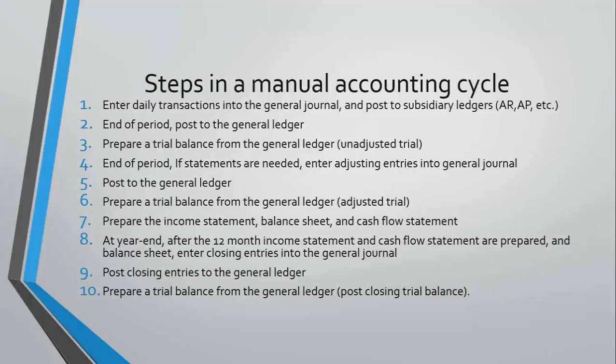Once we've done the closing entries in the same general journal, we post to the same general ledger to get balances. Then we do number 10, the final trial balance, which we call the post-closing trial balance. It is very short because it only has the permanent accounts: assets, liabilities, and stockholders' equity.